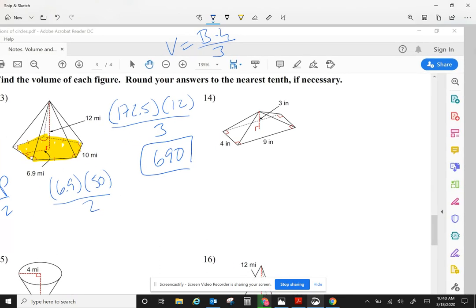Now let's take a look at number 14. The base is a rectangle, four by nine rectangle, so I get that it's 36. The height is three, and I have to divide this by three. So 36 times three divided by three gives me 36.